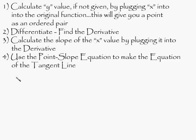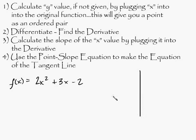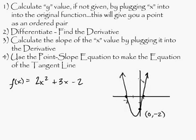So if they gave you a function, like f(x) is equal to 2x squared plus 3x minus 2. Let's say they told you to find the equation of the tangent line of this parabola at 0. In that case, you'd have a graph that looks something like this. So they want you to find the tangent line to this equation at this point right here.